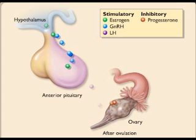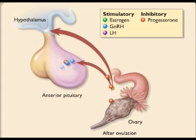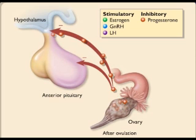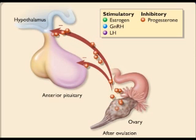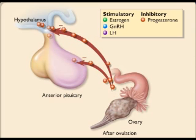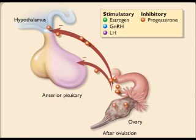After ovulation, the corpus luteum is formed in the ovary and begins to secrete progesterone in response to luteinizing hormone. Progesterone inhibits the release of gonadotropin-releasing hormone from the hypothalamus and luteinizing hormone from the anterior pituitary.